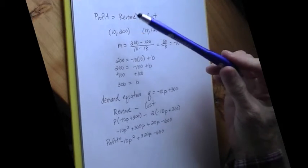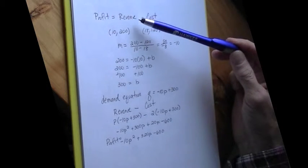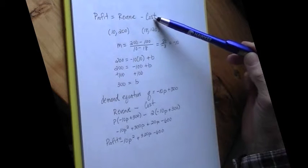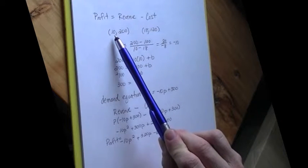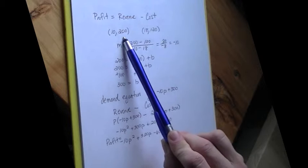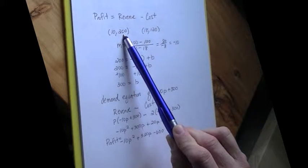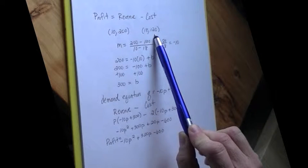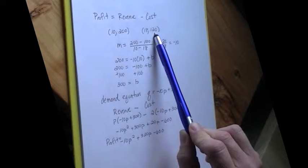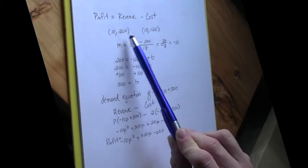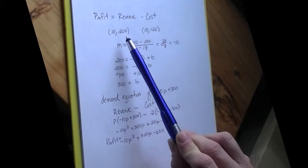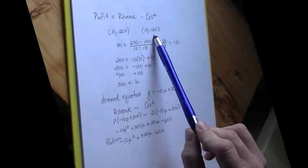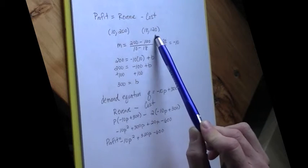We're trying to maximize profit, and profit is revenue, what we take in, minus our cost. So we know that when we're pricing them at $10, we're selling approximately 200 per day. When we're pricing them higher at $18, we're selling approximately 120 per day. We can assume that the relationship between price and quantity is close enough to being a straight line that we're going to use that in our model.